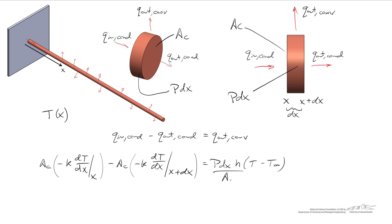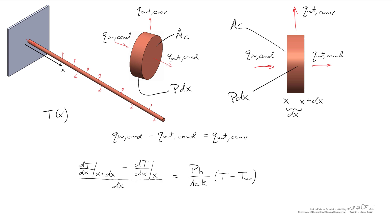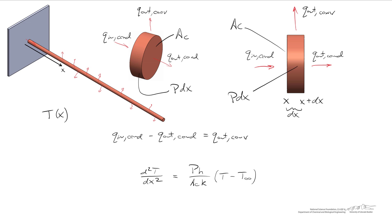We manipulate the equation by dividing by the cross-sectional area, the thermal conductivity, and then by dx. The two negative signs cancel, leaving us with dT/dx evaluated at x plus dx minus dT/dx evaluated at x. Taking the limit as dx goes to zero gives us a second derivative of temperature with respect to x equal to the right-hand side. Checking units: the left-hand side has Kelvin per meter squared. On the right-hand side, we have the perimeter in meters and the heat transfer coefficient in watts per meter squared Kelvin.